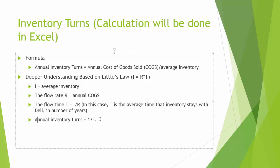To understand this: if on average inventory stays with the company for one entire year, it means that Dell turns over inventory only once a year. For another example, if on average inventory stays with the company for half a year or six months, then Dell is able to turn the inventory over twice a year, and so on. So it's no surprise we see the formula for calculating annual inventory turn as equal to 1 over flow time T.